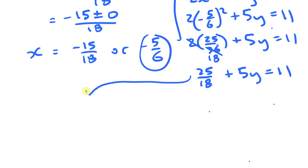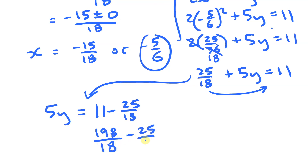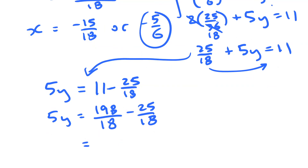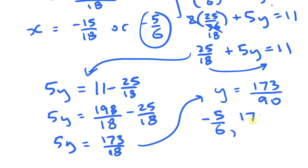Isolating 5y, I move 25/18 to the other side: 5y = 11 − 25/18. Converting 11 to eighteenths gives 198/18, so 5y = 198/18 − 25/18 = 173/18. Dividing both sides by 5, y = 173/90.